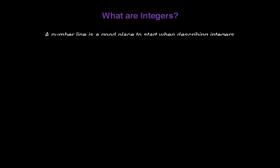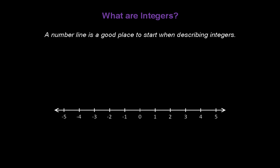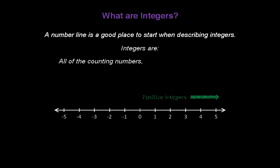First of all, what are integers? Well, a number line is a good place to start when describing integers, because integers are all of the counting numbers — those are positive integers — their opposites — those are negative integers — and the number 0.